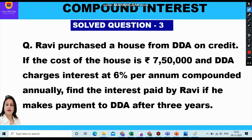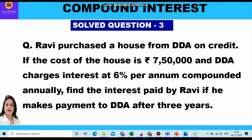Let us first study the question. Ravi has purchased a house from DDA on credit and the cost of the house is seven lakh fifty thousand, meaning he has borrowed seven lakh fifty thousand from DDA. He has to pay interest at the rate of six percent per annum compounded annually for three years. So the principal is rupees seven lakh fifty thousand, rate of interest is six percent per annum, and time period is three years.